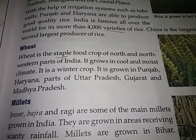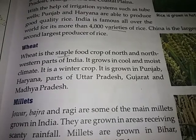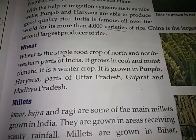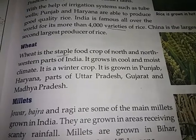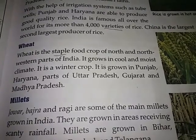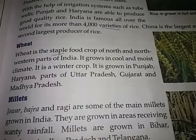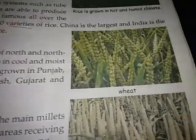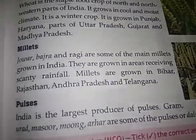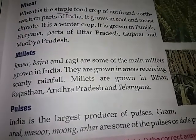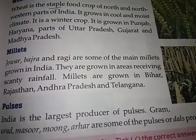Wheat: wheat is the staple food crop of northern and north-western parts of India. It grows in cold and moist climate. It is a winter crop. It is grown in Punjab, Haryana, parts of Uttar Pradesh, Gujarat and Madhya Pradesh. Here is a picture of wheat.